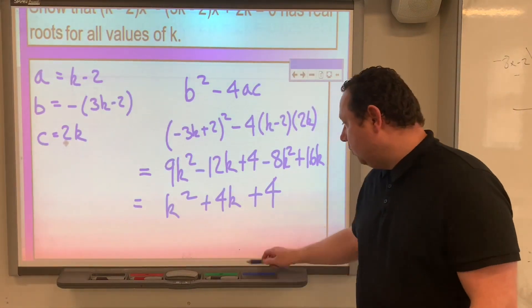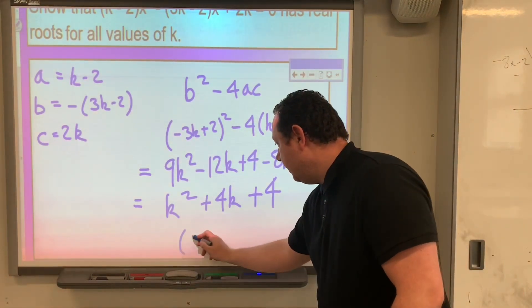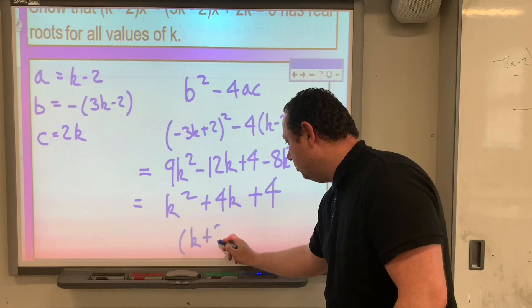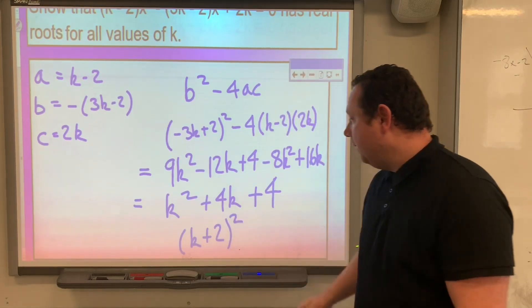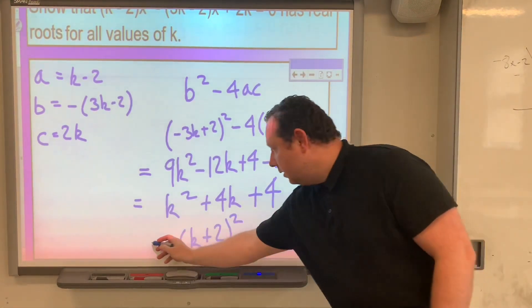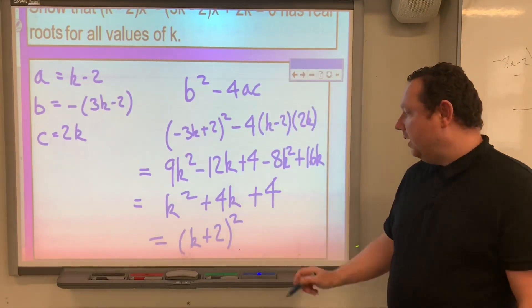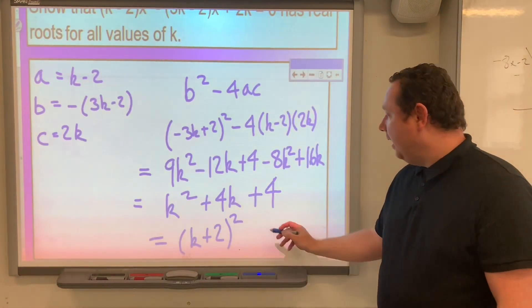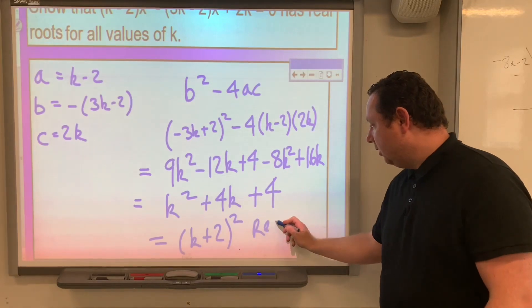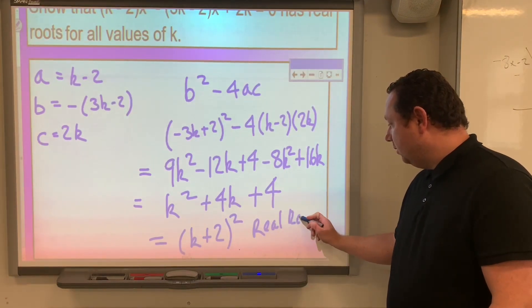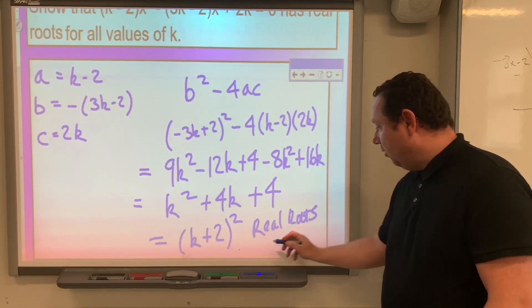So completing the square, we get (k plus 2) all squared. 2 times 2 is 4, so I've already got the 4. So since that's a perfect square, then it has real roots for all values of k.